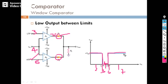With this, we have completed some of the applications of the operational amplifier. In the next session, we will see filters — how the operational amplifier can be used in low-pass filter, high-pass filter, band-pass filter, and other applications.